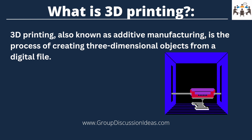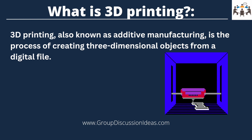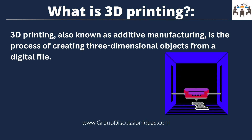The process begins by designing the object using computer-aided design software, which creates a digital model. The digital model is then sliced into many thin layers, typically ranging from 0.05 to 0.3 mm in thickness, depending on the 3D printer and the desired level of detail. The 3D printer then prints each layer sequentially to create the final object.